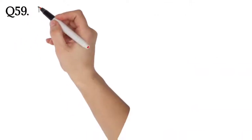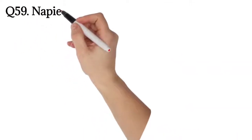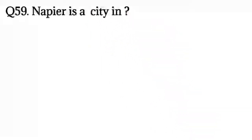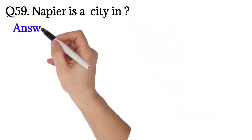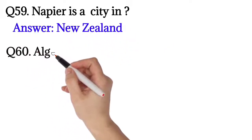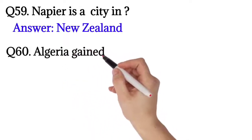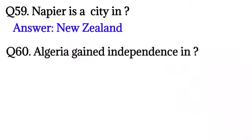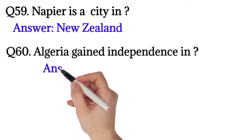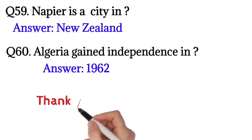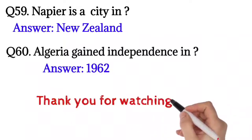Question number 59: Napier is a city in? The answer is New Zealand. Question number 60: Algeria gained independence in? The answer is 1962. Thank you for watching.